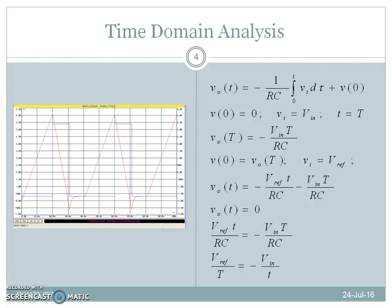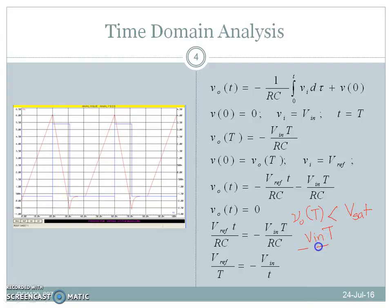In order to design the integrator, it is required to satisfy the condition that Vo(T) should be less than Vsat — that is, −Vin × T / RC should be less than Vsat.